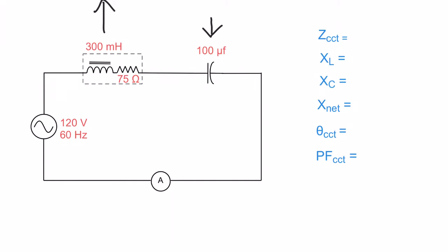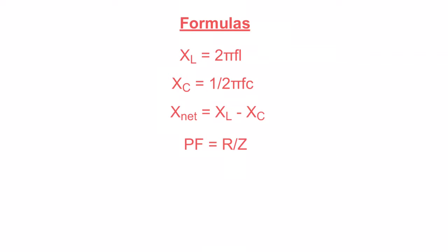Let's take a look at the formulas we're going to be using for this walkthrough. You should be familiar with a few of these. We've got XL equals 2 pi FL, that's your inductive reactance. Now this guy here, XC, your capacitive reactance, is 1 over 2 pi FC. So it's the inverse, the opposite of the inductance, but you're using the capacitance, not the inductance.